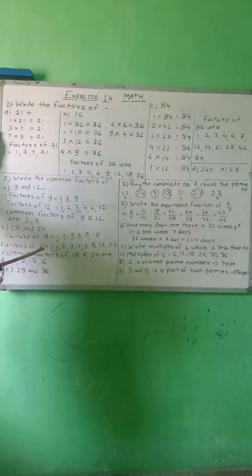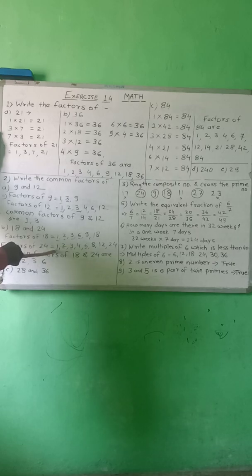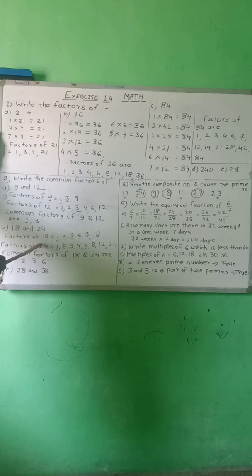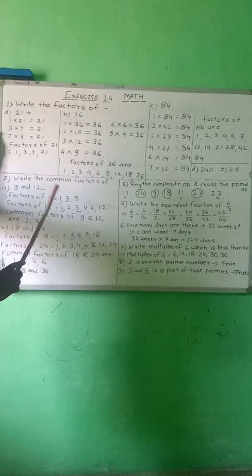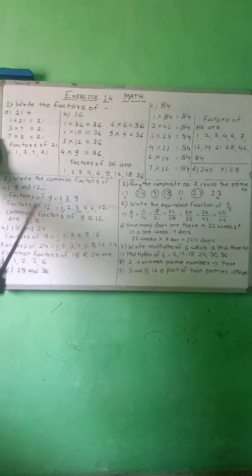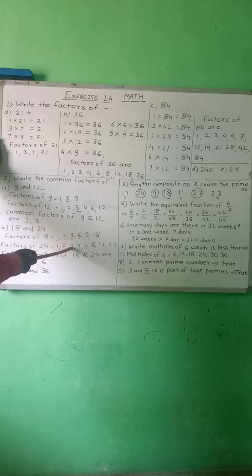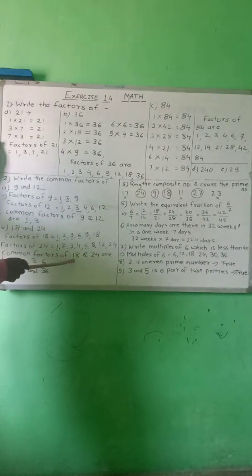Next, find out the factors of 24. 1 is a factor of every number. 2 times 12 is 24. Then 3 eights are 24. 4 times 6 is 24. 6 times 4 is 24. 8 times 3 is 24. 12 times 2 is 24. And 24 times 1 is 24. Then find out the common factors: 1 is common, then 2, then 3, and also 6. Therefore, the common factors of 18 and 24 are 1, 2, 3, and 6.